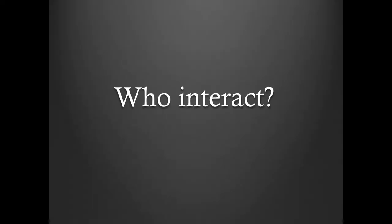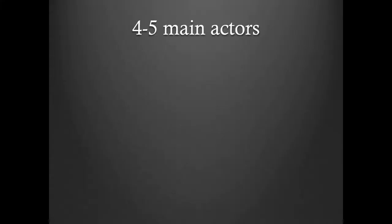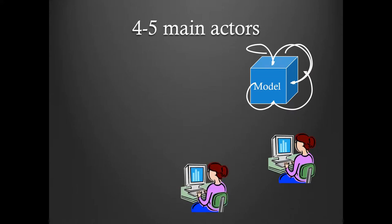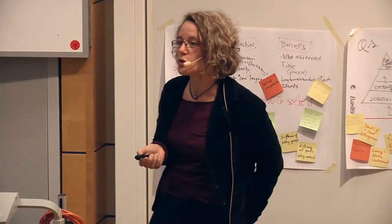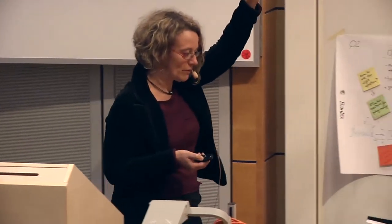In these interactions, who are the people we interact with? It's not just farmers — there are four to five main actors. If you work with models, there's the model itself, the modeler, the app producer, the farmer, and perhaps a social scientist. We are a group and we need to understand each other.